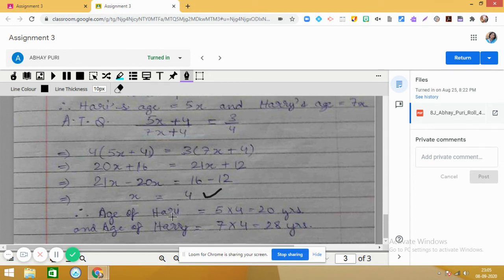So age of Hurry is 5 × 4 = 20 years, and age of Harry is 28 years.